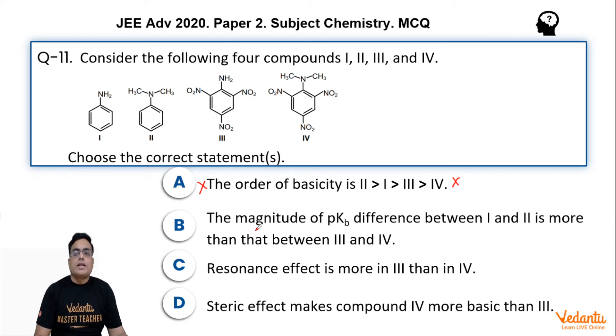Now option B says that magnitude of pKb difference between I and II is more than that between III and IV. But we have data that pKb difference between I and II is 0.53, and pKb difference between III and IV is 4.6. Four is more basic than third because this lone pair is not in the same plane as the p-orbital because of steric crowding, because of steric inhibition of resonance,